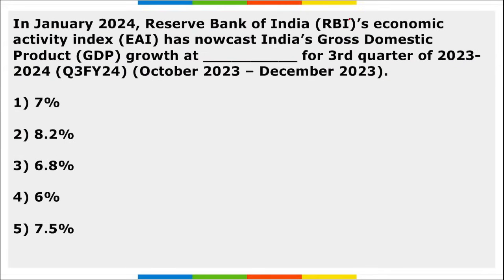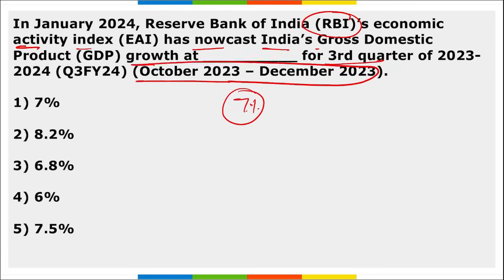RBI's Economic Activity Index has nowcast India's GDP growth rate at 7.7% for the third quarter of FY 2023-24, that is October to December 2023.